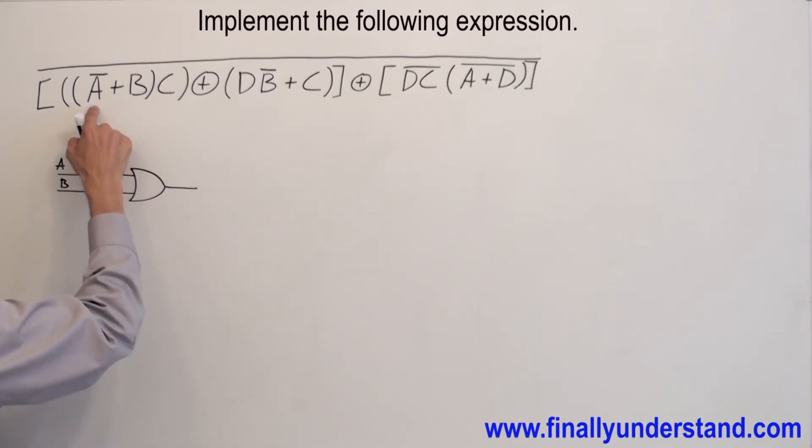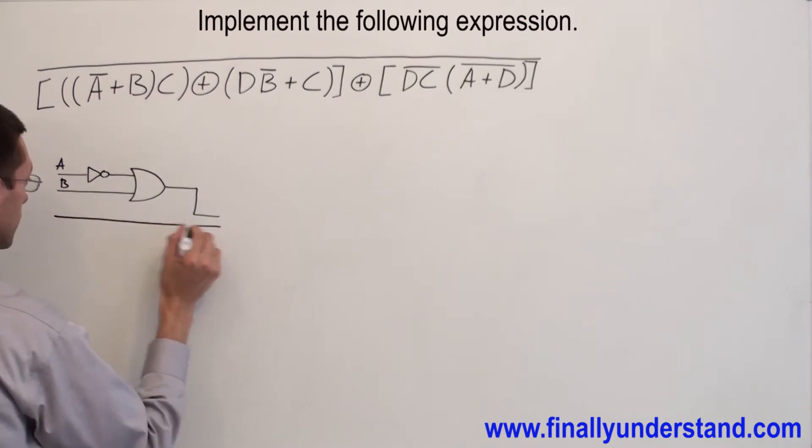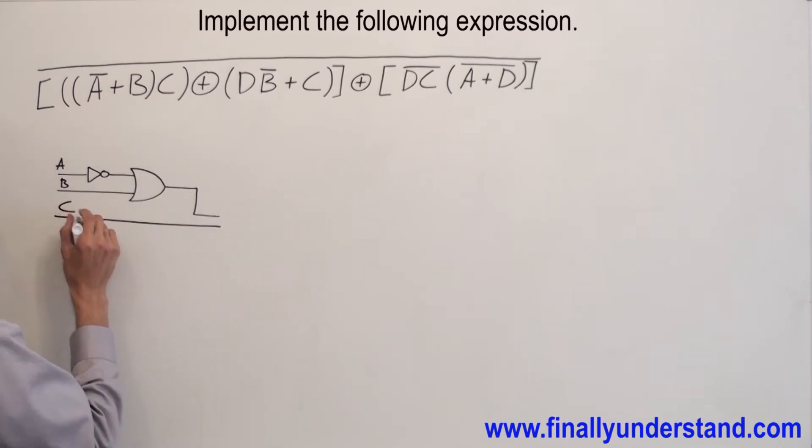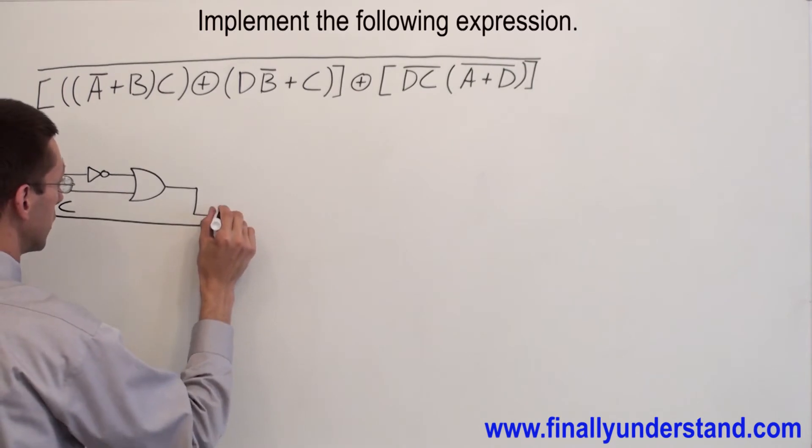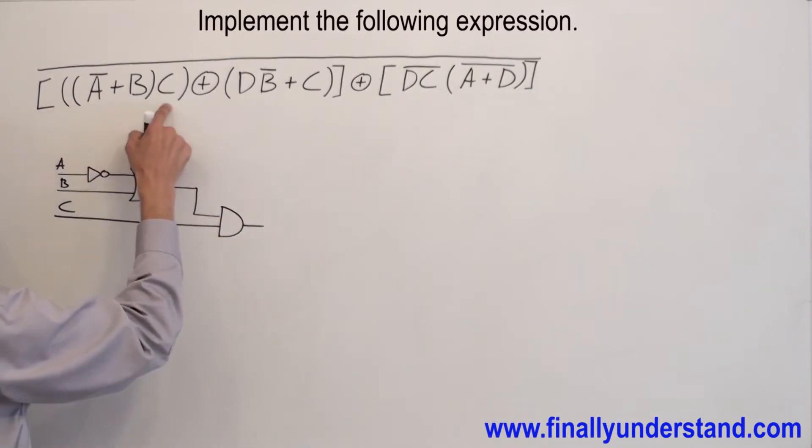Because I have A node OR B, this OR gate is ANDed with C. Now I finish with this part.